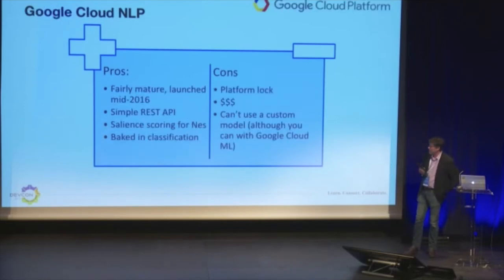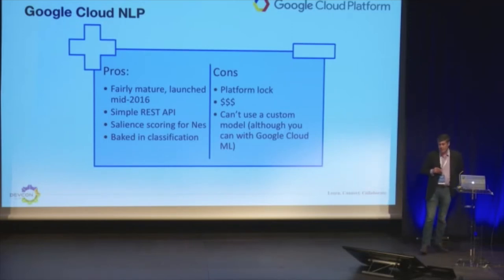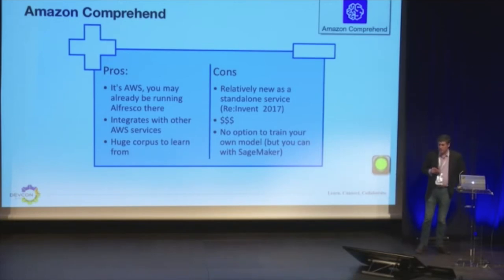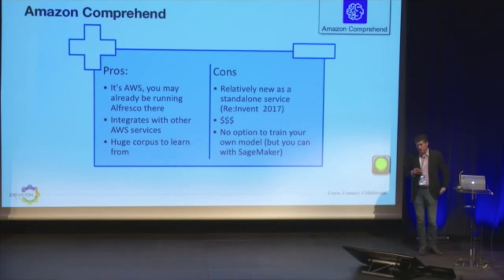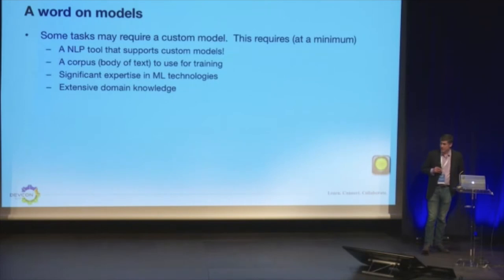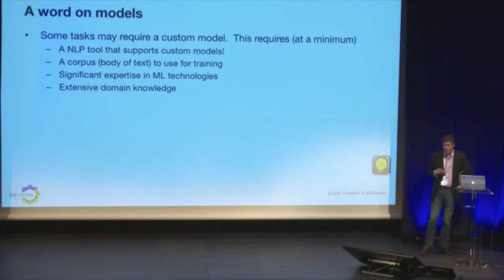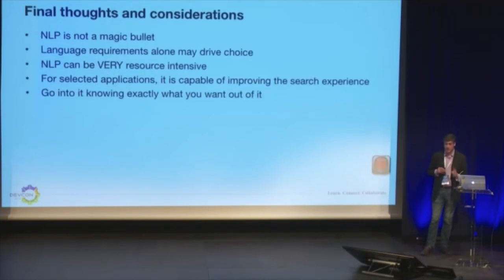Google Cloud NLP was actually one of the best I tested in terms of results — it's mature, easy to use, and salience scoring for named entities is already there. But of course you do have platform lock and you can't currently use custom models. The lack of custom models is also a factor with Amazon Comprehend — you can do a custom one with SageMaker but that's not built into Comprehend, which uses more of a generalized model. It integrates well with other services and their corpus is massive. When we start talking about domain-specific content, that custom model capability may become important, and that's really restricted right now to on-prem options.